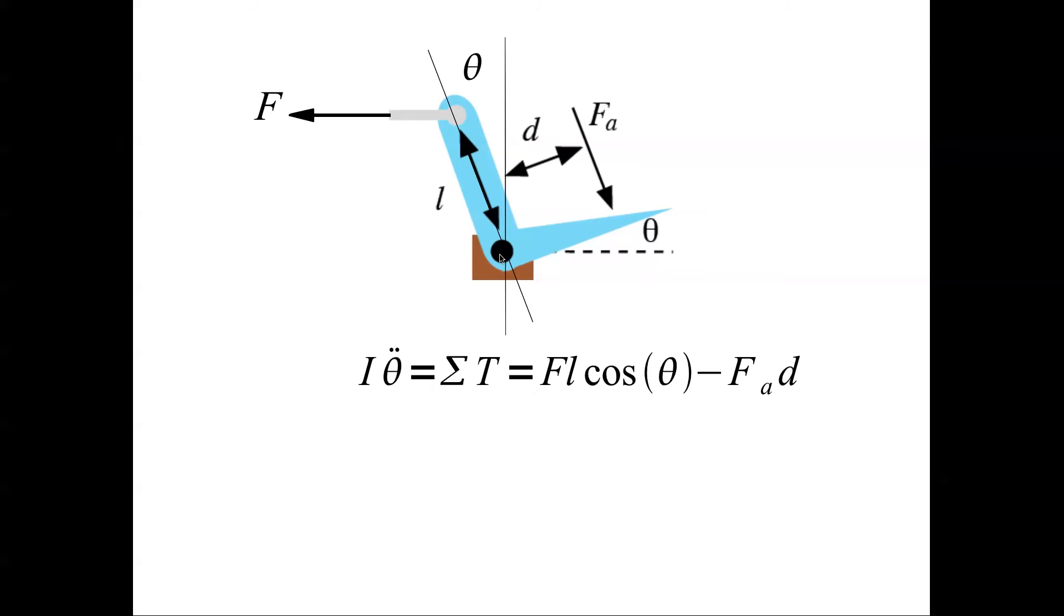If you do the torque balance, you get I theta double dot equal to summation of all torques which is F l cos theta minus Fa times d. That is the torque due to Fa. This torque is in the clockwise direction. This is the anticlockwise direction. That is why this is positive and negative sides.